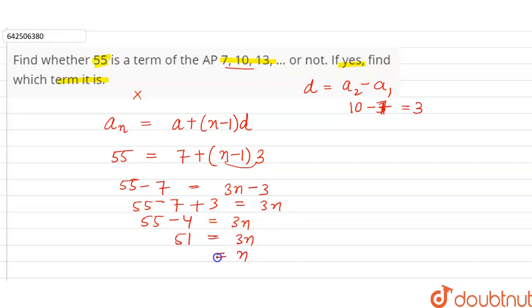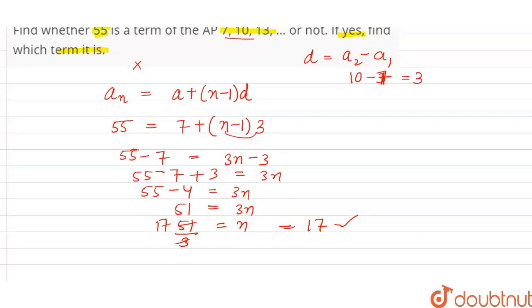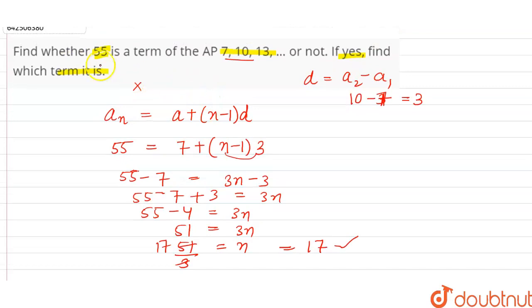The value of n equals 51 divided by 3, which equals 17. As you can see, this is a whole number, so we can say that 55 is a term of the given AP. Since the question asks which term it is, we can say it is the 17th term of the given AP.